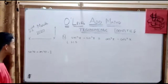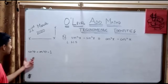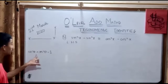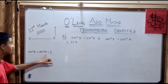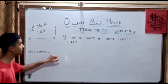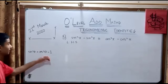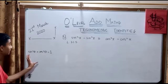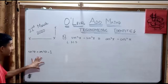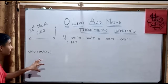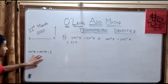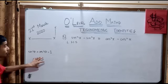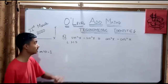The identity we will use is sin squared theta plus cos squared theta equals to 1. Theta means any unknown angle — it could be any variable. This is an identity we must memorize. We have to make good use of this so that we can solve this question easily.